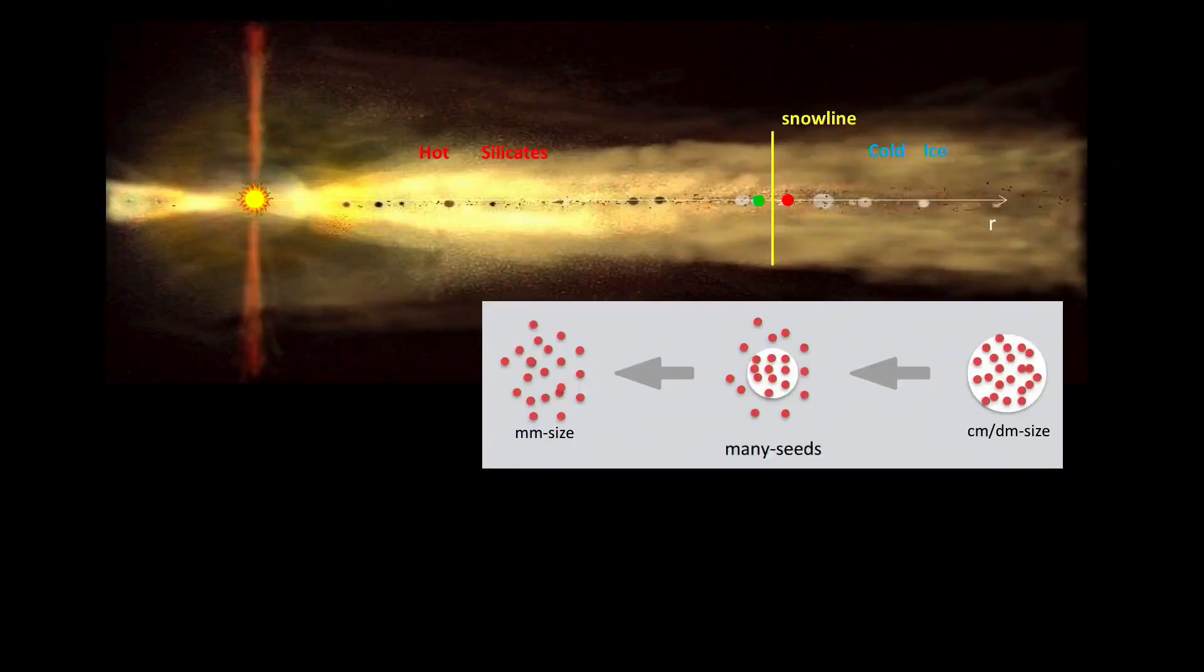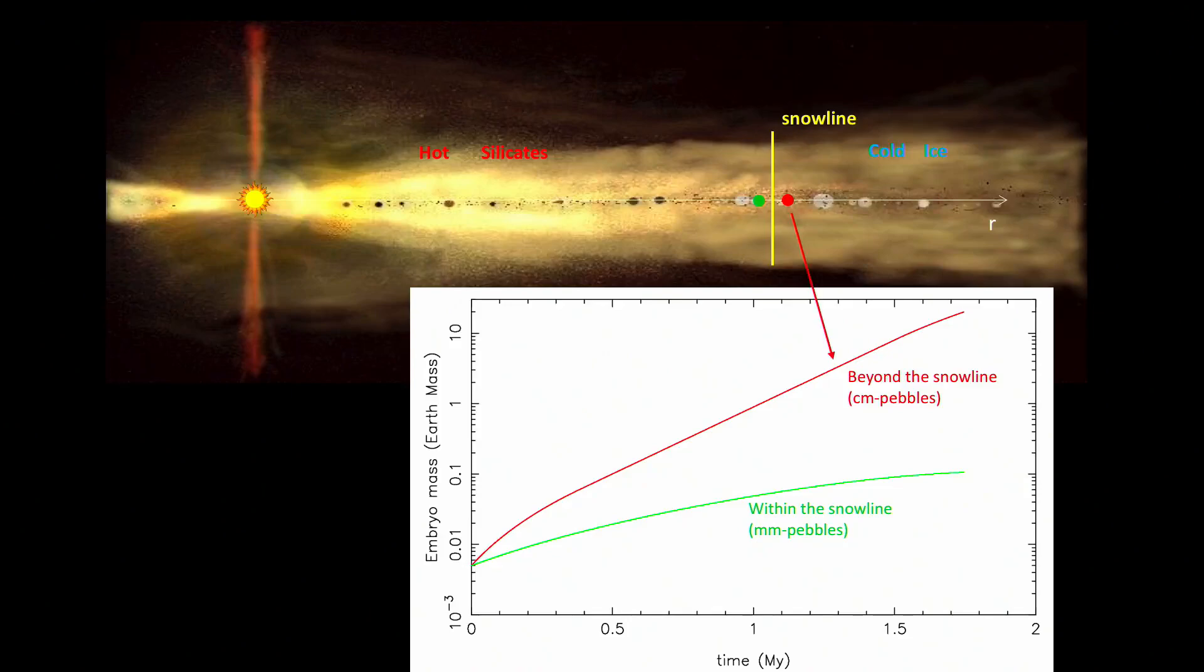Now pebble accretion is very sensitive to the size of the pebbles to accrete. So consider, for example, two protoplanets that grow in the disk: one just inside of the snow line, the other just outside of the snow line. The red one, the one just outside of the snow line, because it can accrete centimeter-size pebbles, it can grow to 20 Earth masses in the time when the inner one, because it can only accrete millimeter-size pebbles, can grow only to about the mass of Mars.